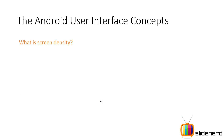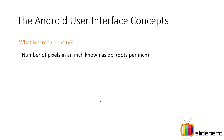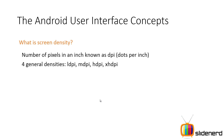Next we have screen density. The number of pixels in an inch is known as dots per inch or pixels per inch — PPI or DPI. There are four main categories: low density, medium density, high density, and extra high density. Every Android device has a different density; they just fall broadly into these four main categories.